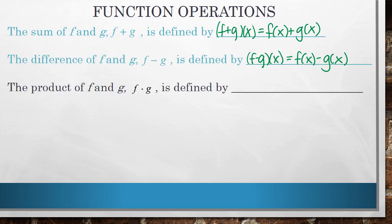The product of f and g, which is notated as f times g, is defined by f times g of x, and it just means f of x times g of x.